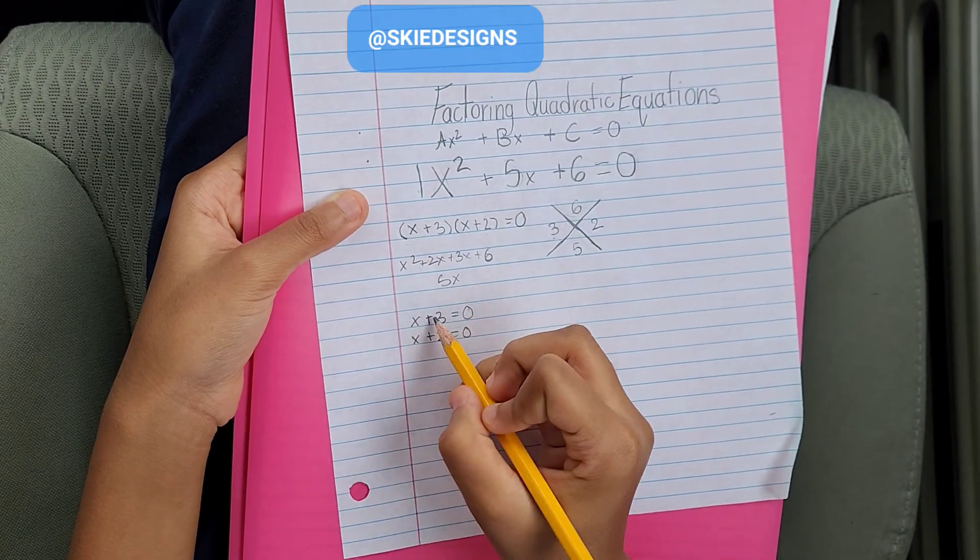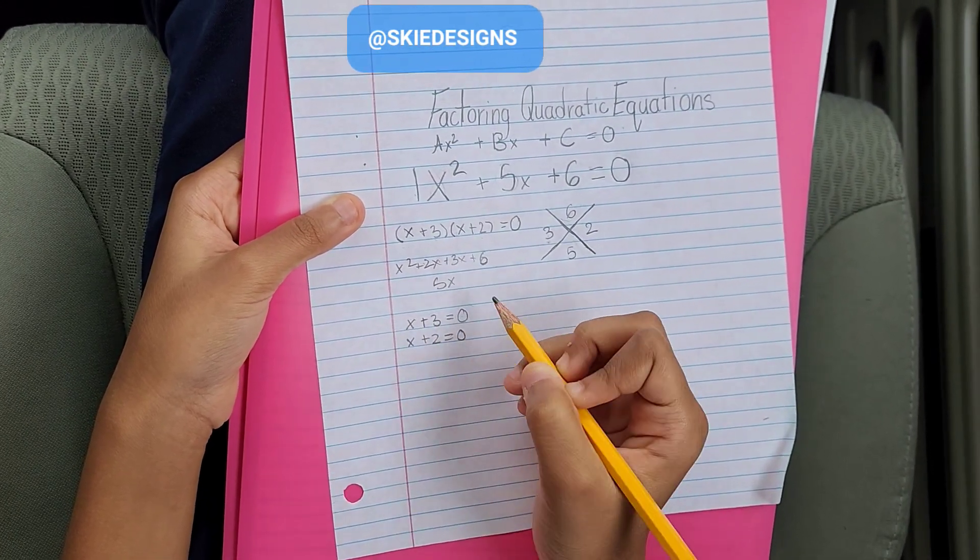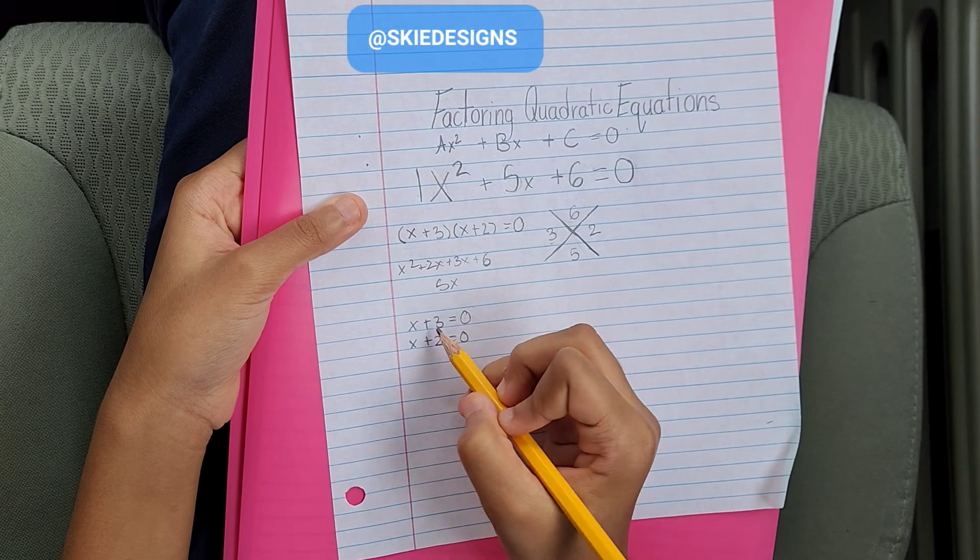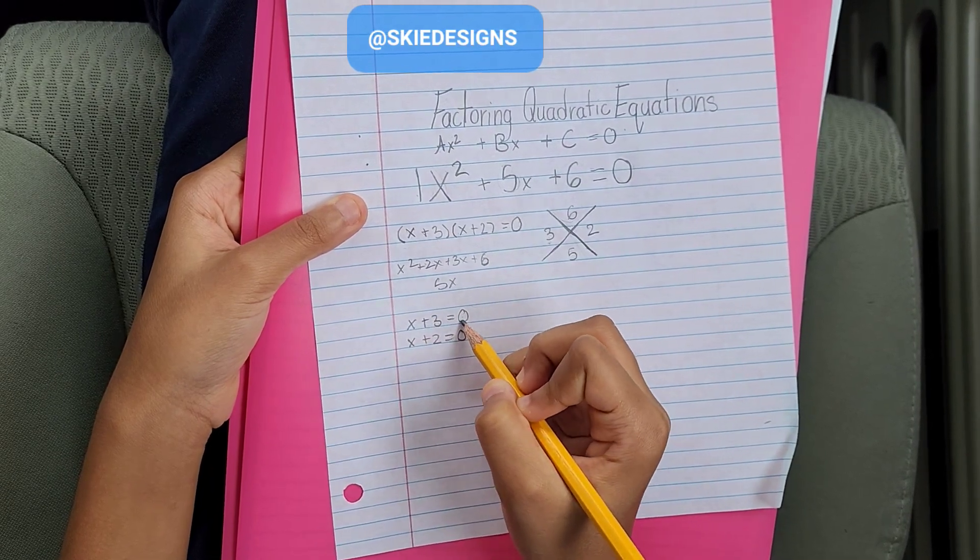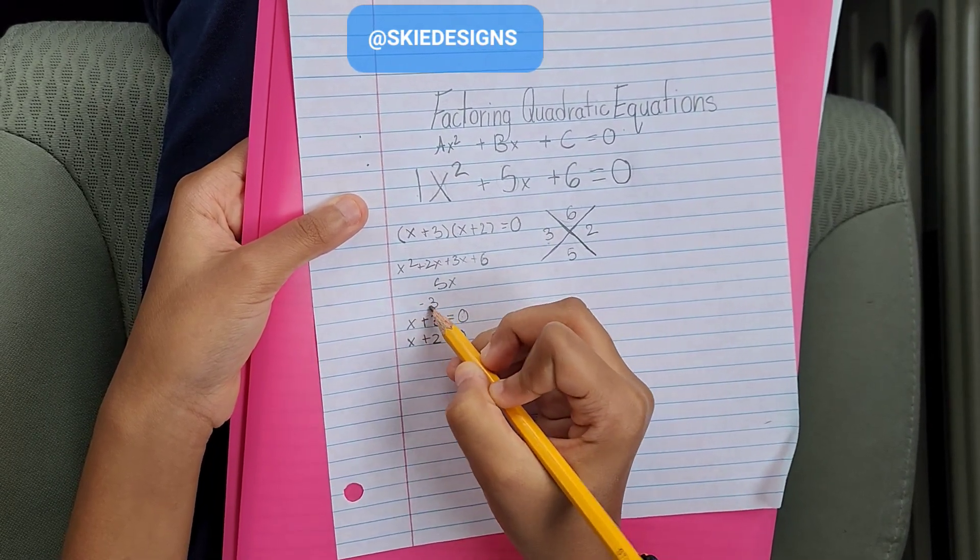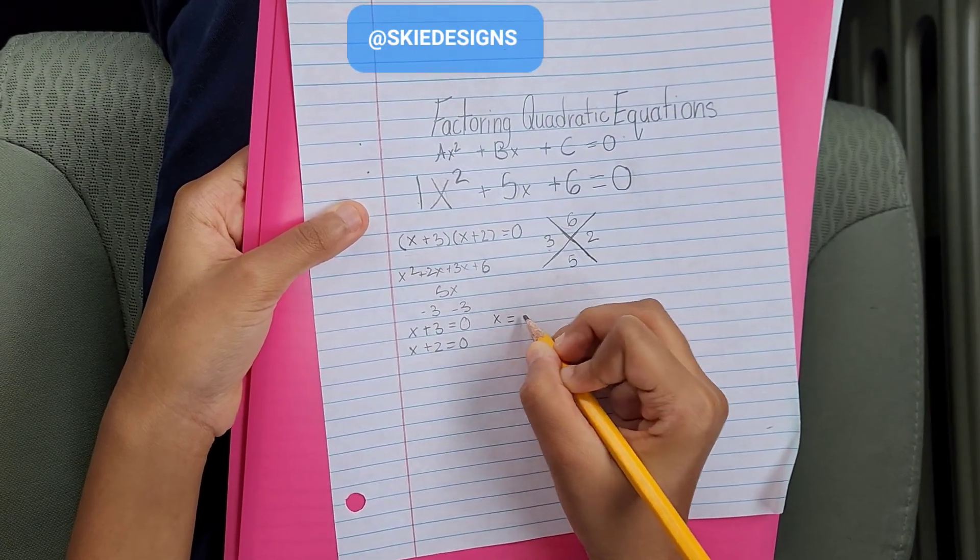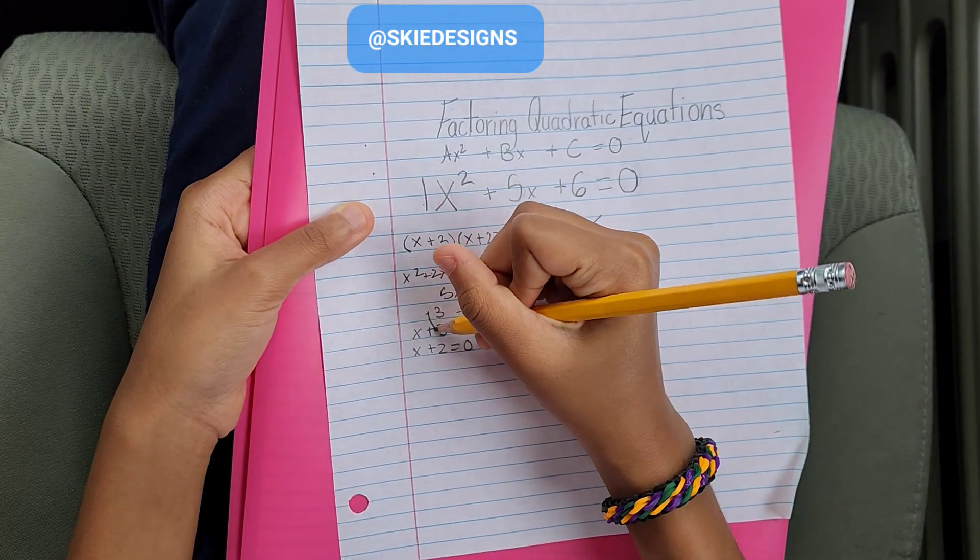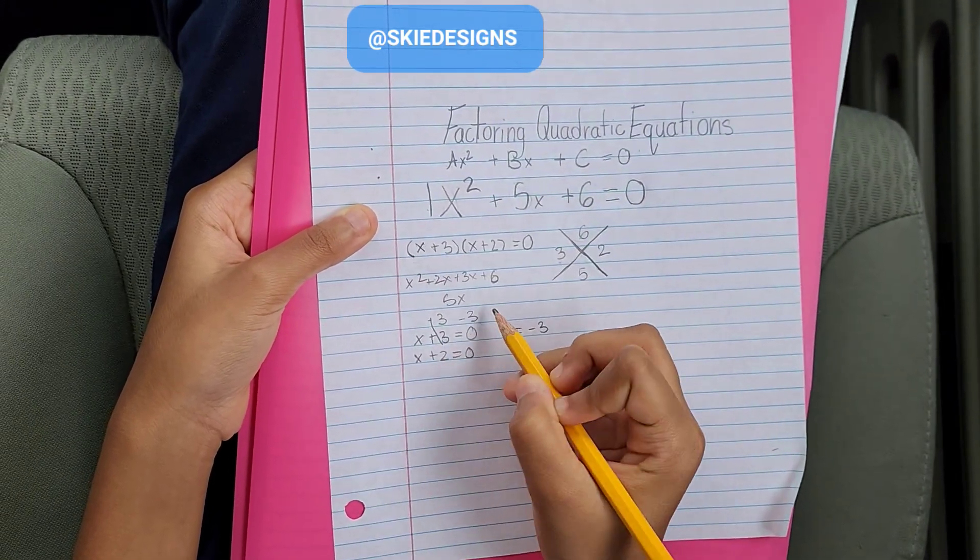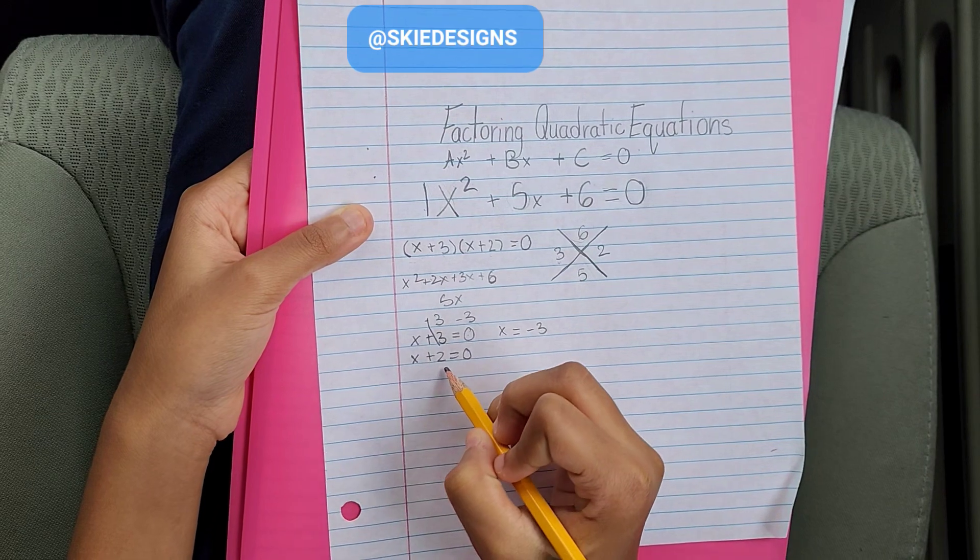For our first equation, we're going to bring this to the other side of the equals sign using inverse operation, which means we subtract 3 from this side and subtract 3 from this side. We minus 3 here, and we minus 3 here. This gives us x is equal to negative 3, because this cancels out, so we still have 0 minus 3, which is negative 3.